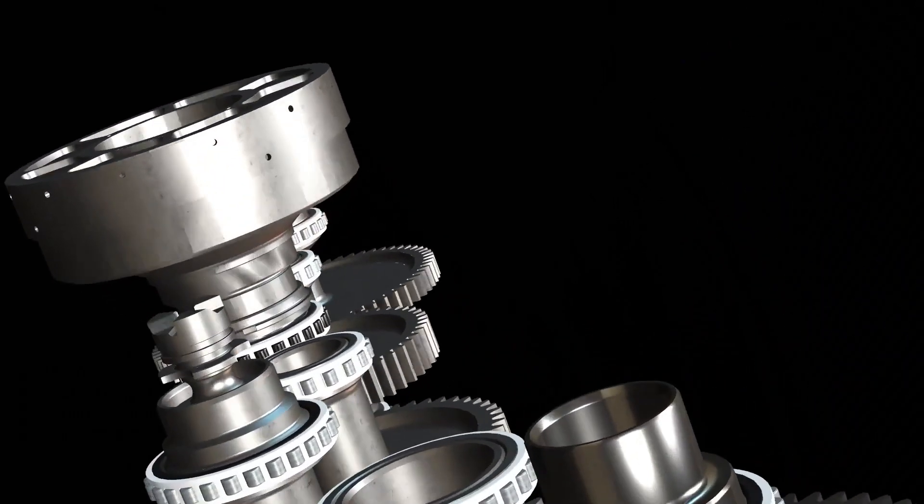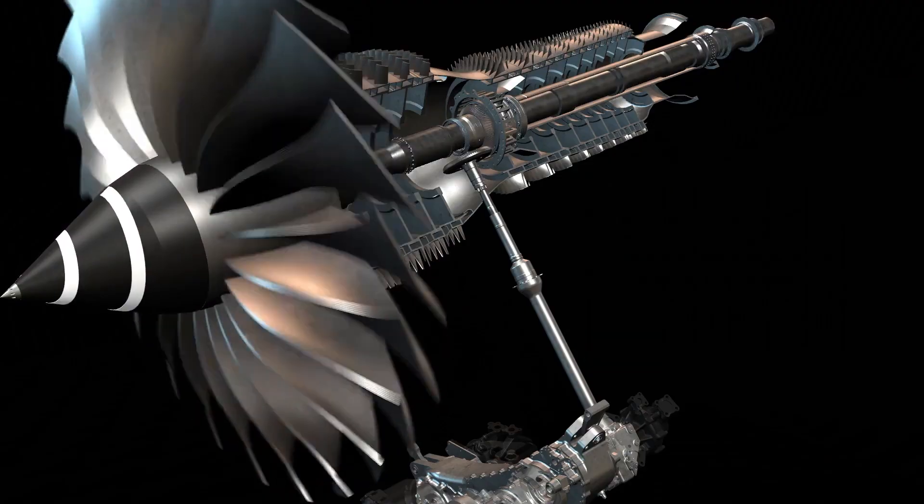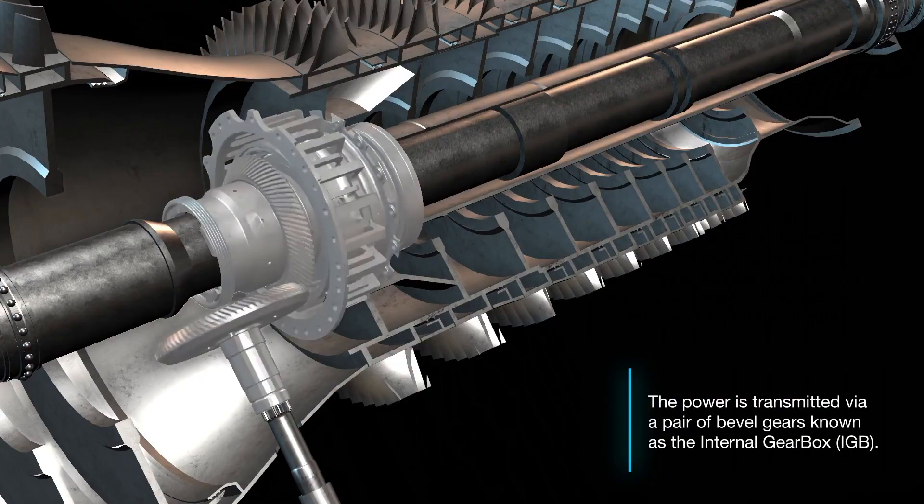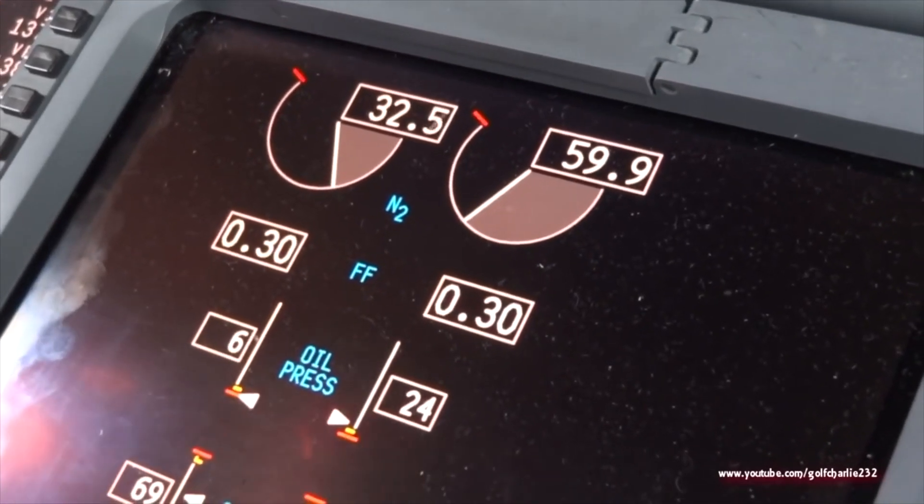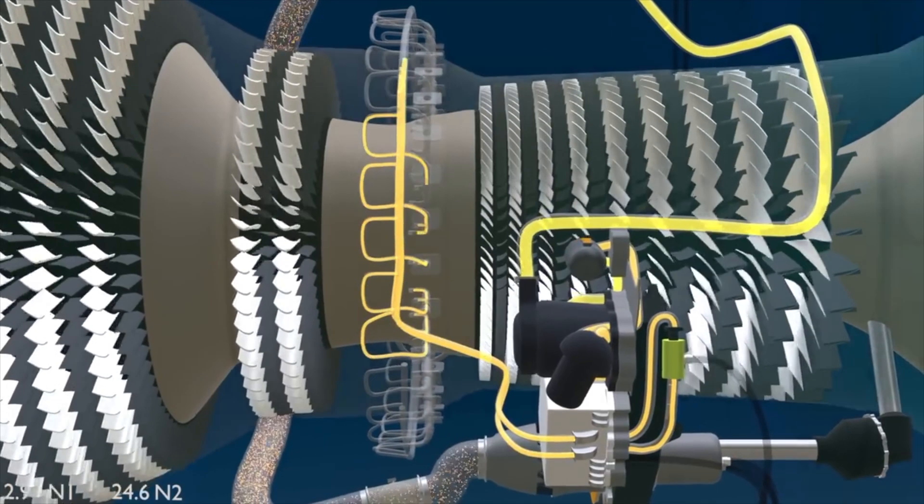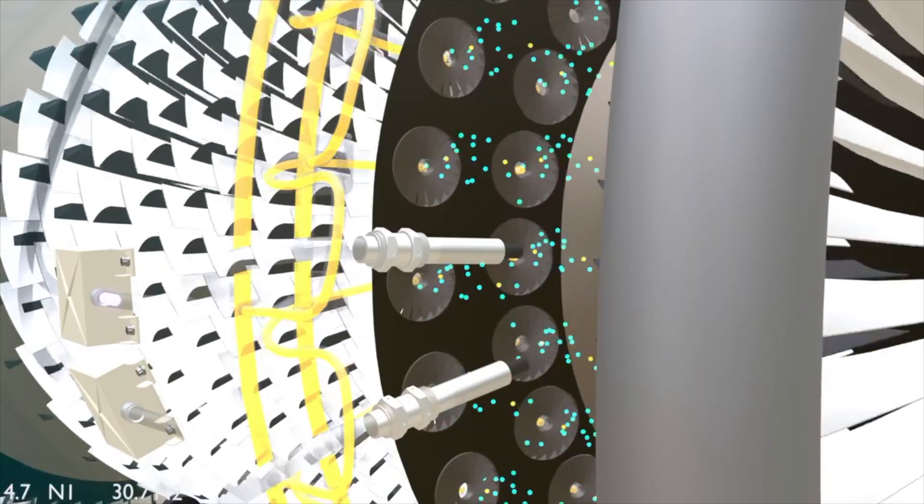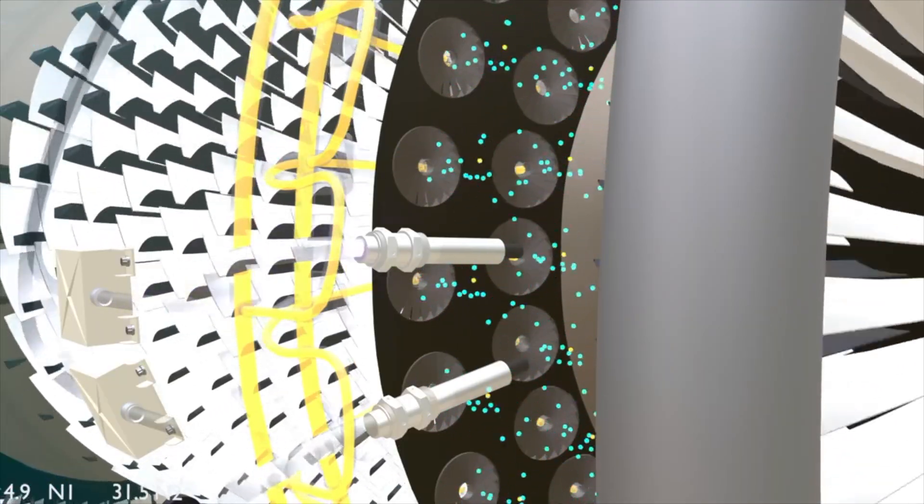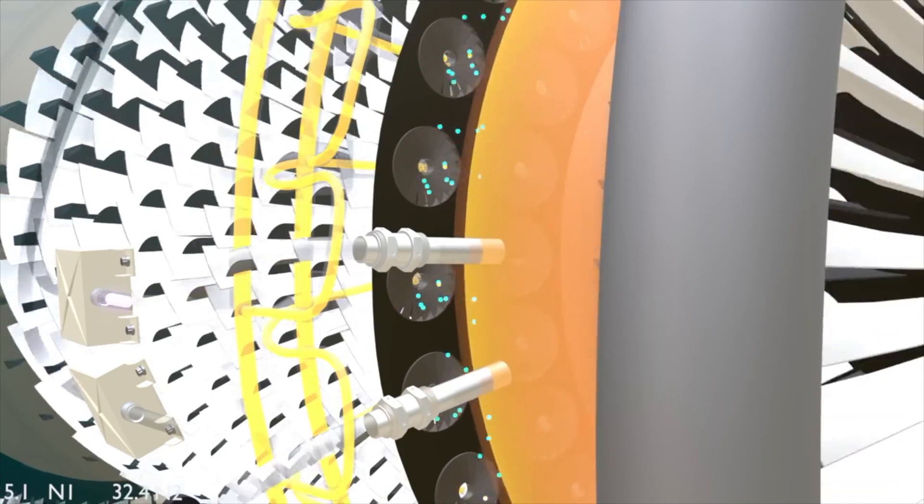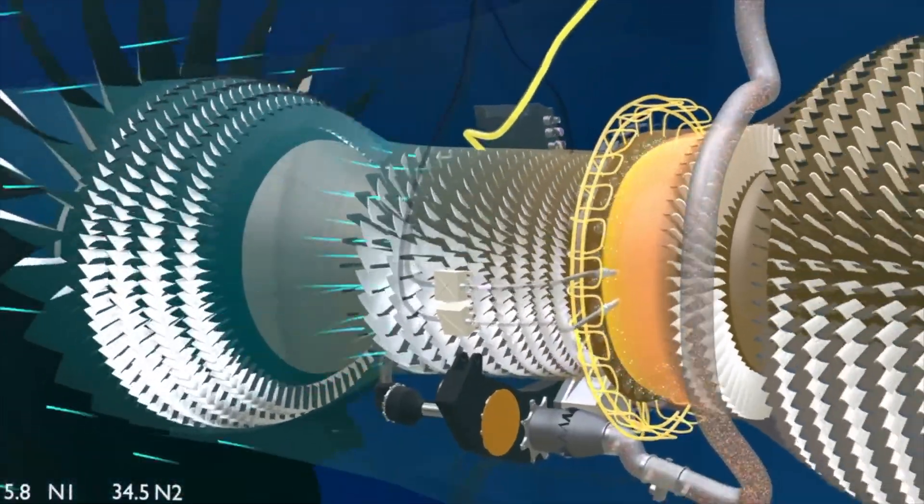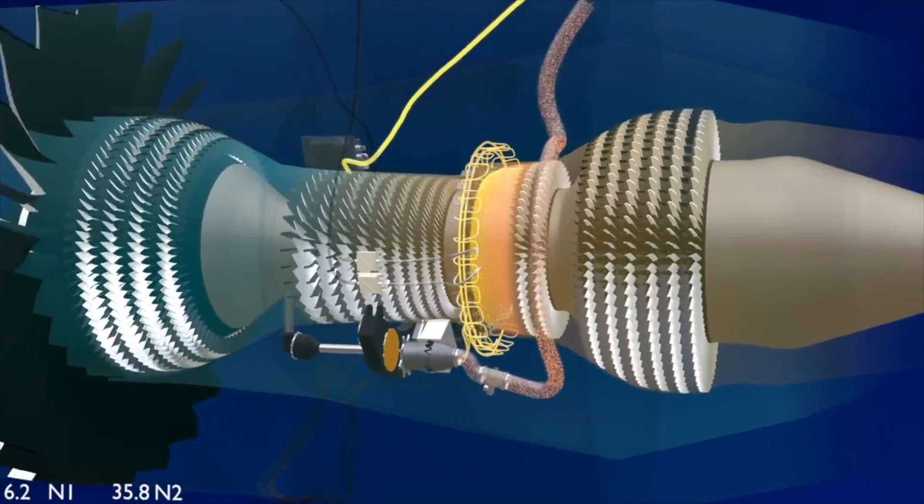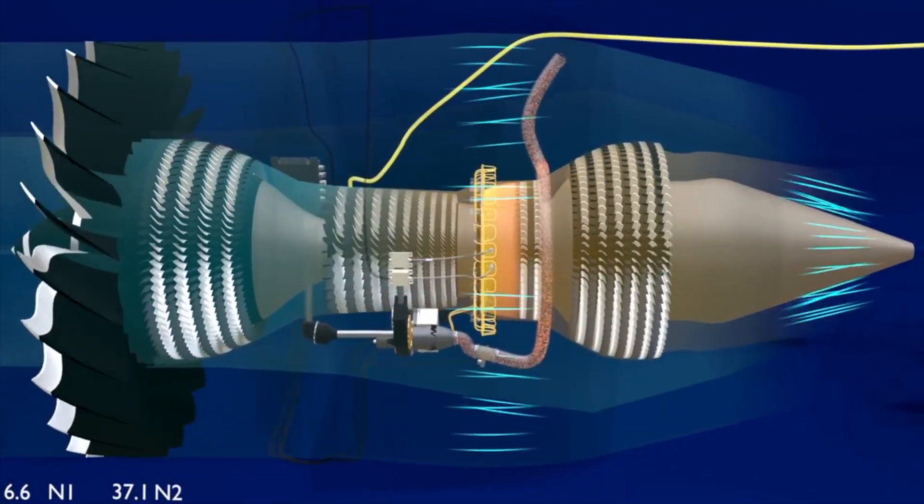The part of the engine that it interacts with is known as the N2 core. As the N2 builds up the pilot monitors this from the cockpit instruments. At about 20 percent N2 rotation fuel is introduced into the combustion chamber. The igniters then fire up the fuel and air mixture which causes the engine temperature to rise. In most jet engines this temperature is sensed at the turbine stages or exhaust and is called the exhaust gas temperature or EGT.